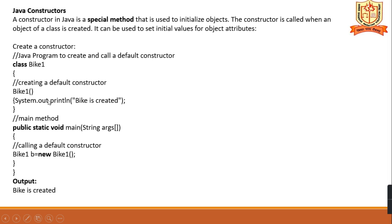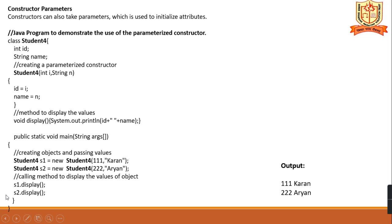In this constructor, we have printed one statement: 'bike is created.' In the main method, we are creating the object of the class. When the object of the class is created, that is when the constructor is called. So creation of the object is initialized — that is when the constructor is called. And then, a constructor can also take parameters.